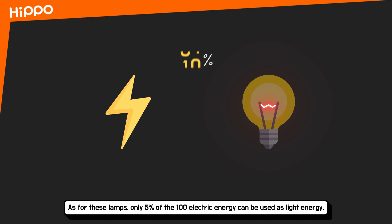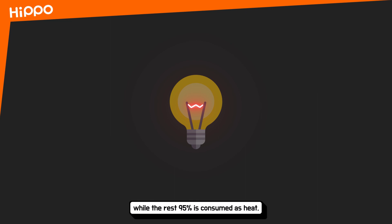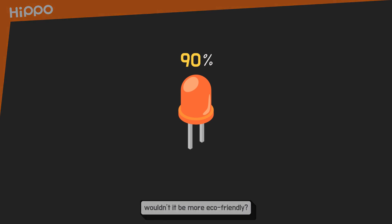As for incandescent lamps, only 5% of 100 units of electric energy can be used as light energy, while the remaining 95% is consumed as heat. As LED can reduce the consumption of electricity by up to 90% compared to fluorescent lights, it is clearly more eco-friendly.